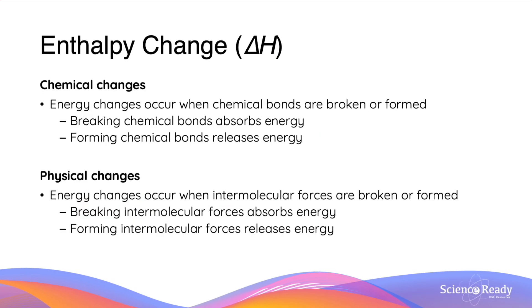In chemical changes, the energy or enthalpy change will occur when chemical bonds are broken or formed. The breaking of a chemical bond absorbs energy, while the forming of a chemical bond releases energy. This may seem counterintuitive, so a helpful analogy is to treat the bond as a branch — in order to break that branch, you would have to put in effort, or energy.